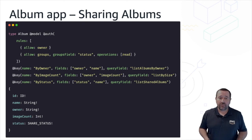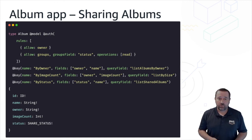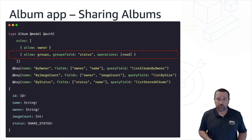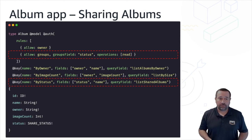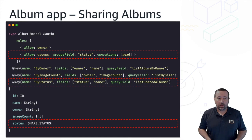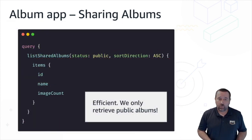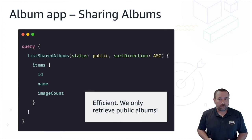Another scenario is sharing albums. Here we combine how we use a global secondary index with our authorization rules. We add an auth rule for groups and check the status field — a new field on our type — to determine if access is based on public or private. We've also added another key attribute, a new global secondary index allowing us to query by status — public or private. This lets us construct a simple query to list shared albums with the status of public in ascending order, combining an efficient GSI query with an optimized authorization strategy so that only public records are returned to the client.